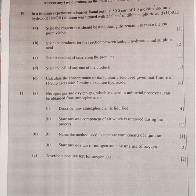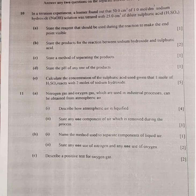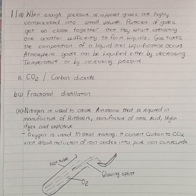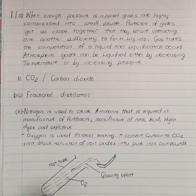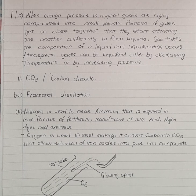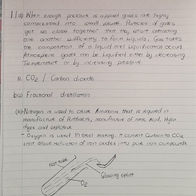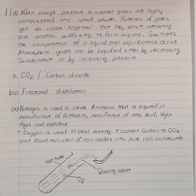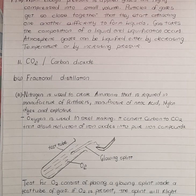Finally, on number 11C, we want to describe a positive test for oxygen gas. I have drawn a diagram to describe the test for oxygen. This is a test tube with oxygen inside. We are going to place a glowing splint inside the test tube. The test for oxygen consists of placing a glowing splint inside a test tube of gas. If oxygen is present, the splint will relight, as oxygen supports combustion. That was the complete solution for number 11.